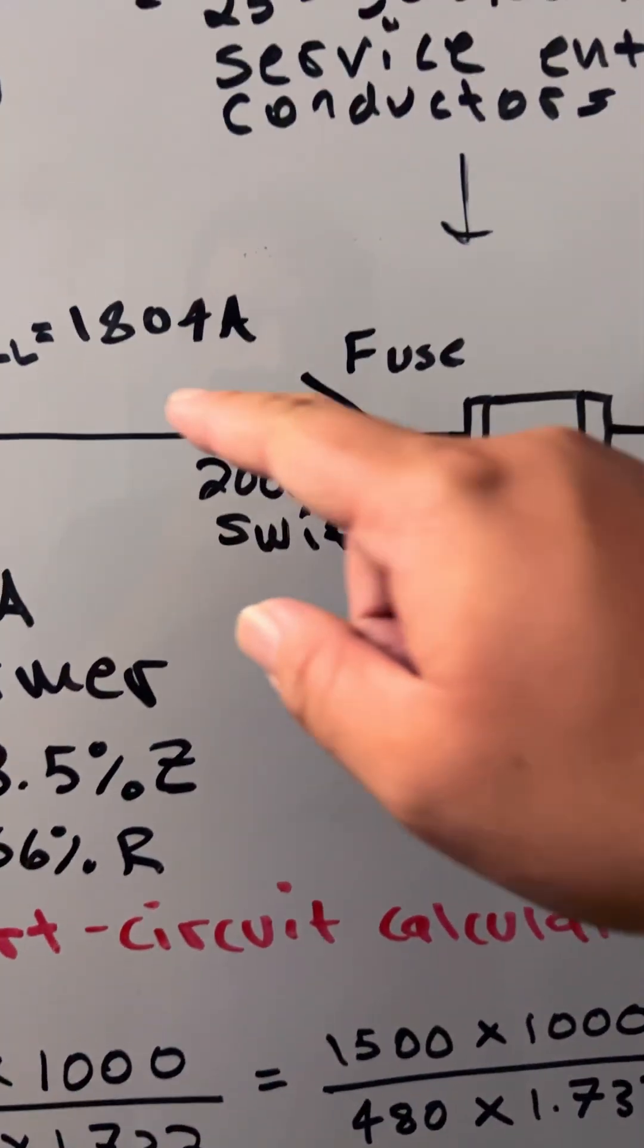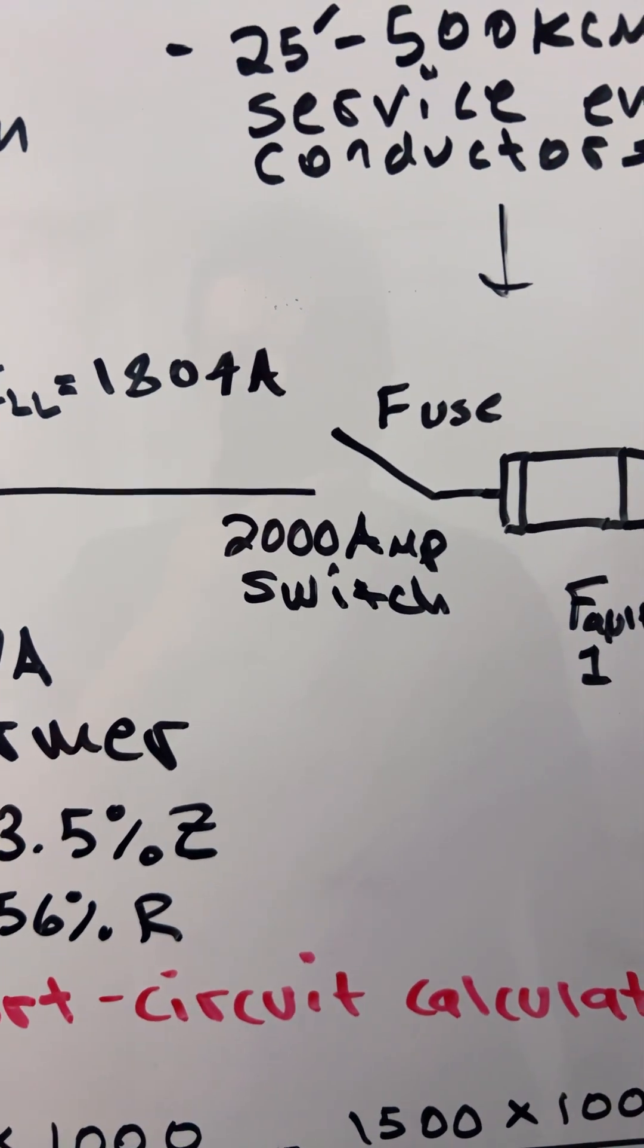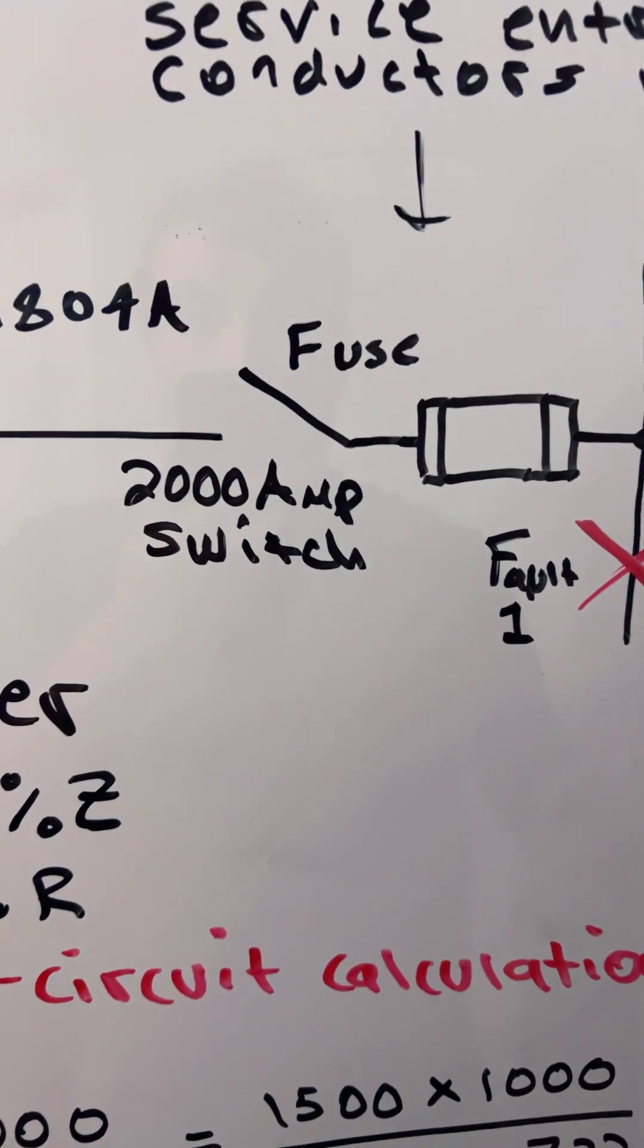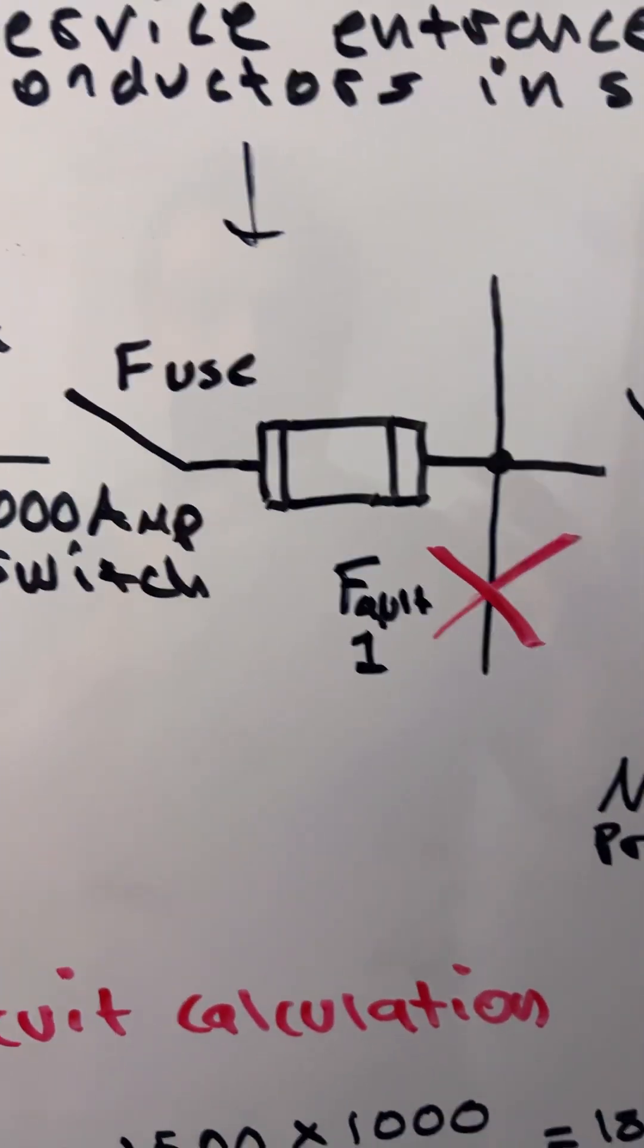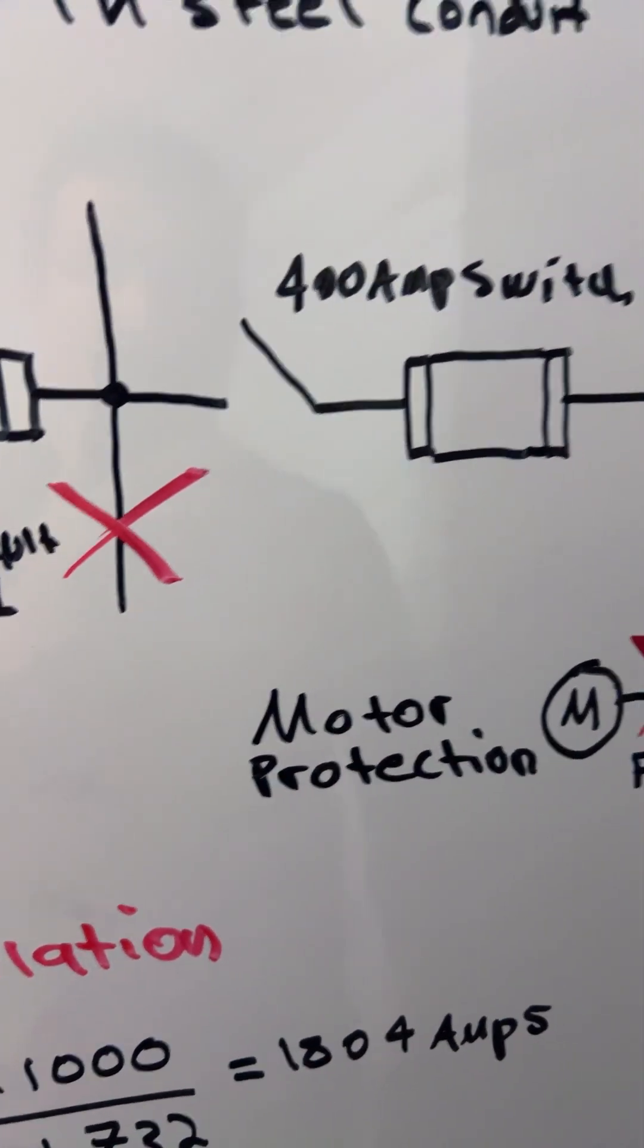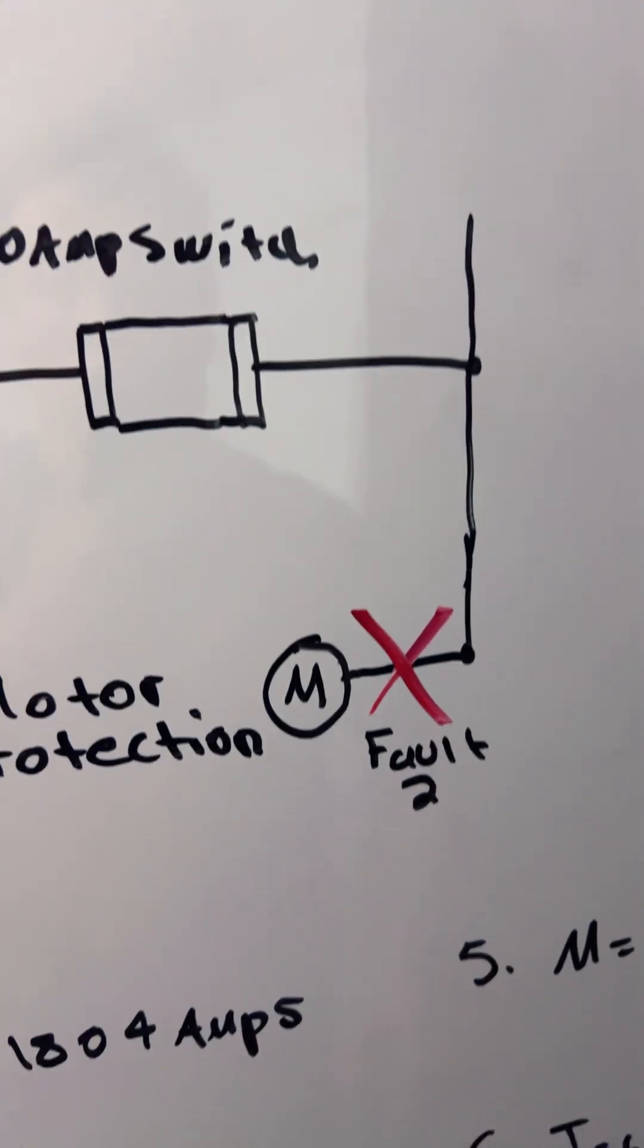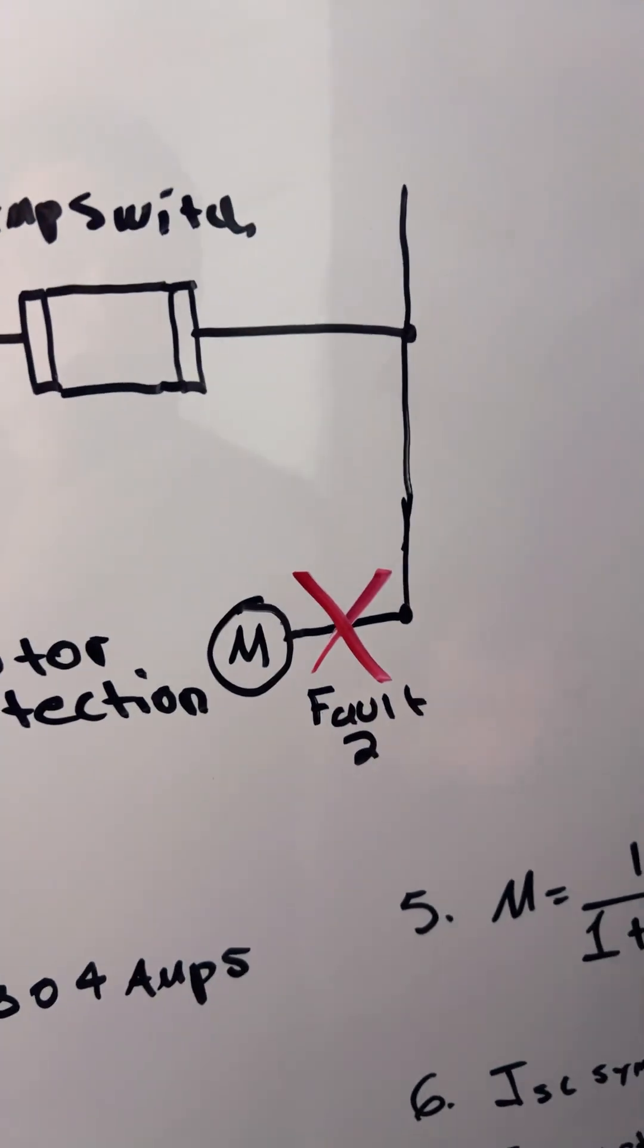The line-to-line current equals 1804 amps. We have a 200 amp switch with fuse where we'll find fault number one, and a 400 amp switch with fuse and motor protection for fault number two. We're going to solve for fault number one.